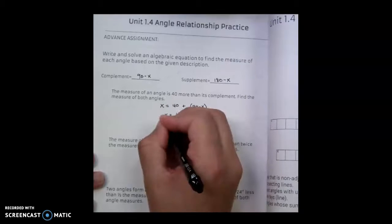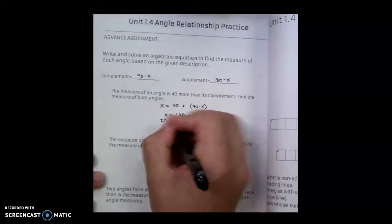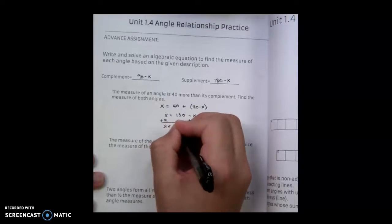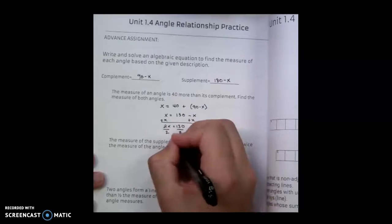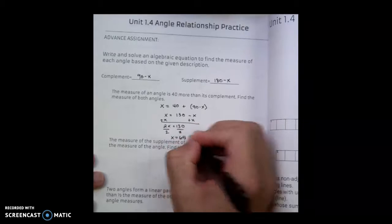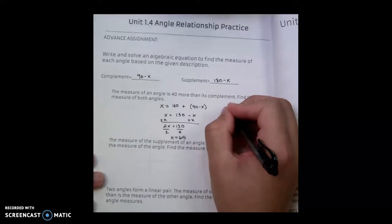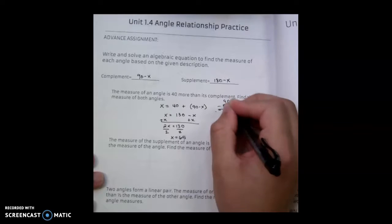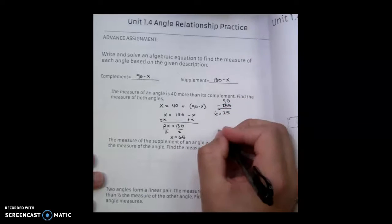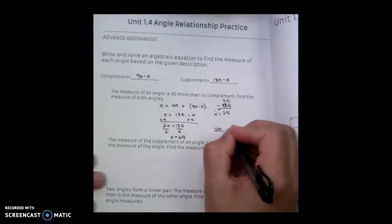I can now add x to both sides to get x's on one side, numbers on the other. I end up with 2x equals 130. Divide both sides by 2, and x equals 65. Then if I take 65 and subtract 90 from it, I end up with 25, or x equals 25. So my two angles are going to be 25 and 65.